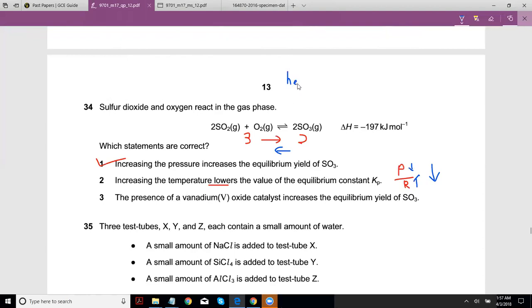The way I used to learn it was: if it's high temperature, it favors the endothermic side. If it's low temperature, it favors the exothermic side. If the forward reaction is negative, it's exothermic, so the backward reaction should be endothermic. If you're increasing temperature, it should favor the endothermic side, which would make it move back. So the statement is also correct because if it moves back, then product value comes down. The presence of vanadium pentoxide catalyst increases the equilibrium yield of SO3 - no, it just causes the equilibrium to be reached quicker, but the equilibrium itself does not change. So this is B, one and two.